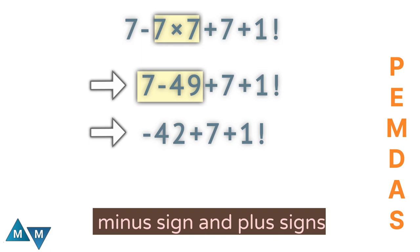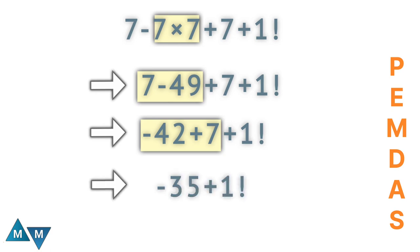Now minus 42 plus 7 will give minus 35. Now the expression becomes minus 35 plus 1 factorial.